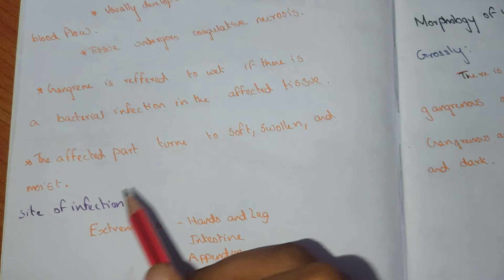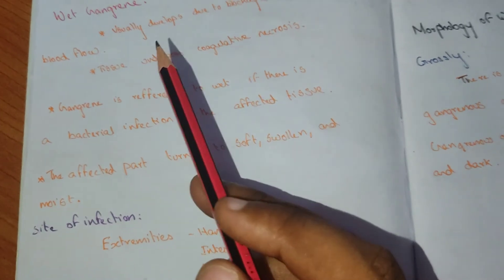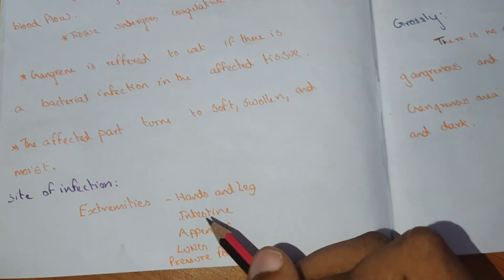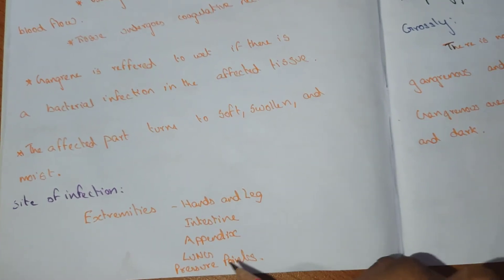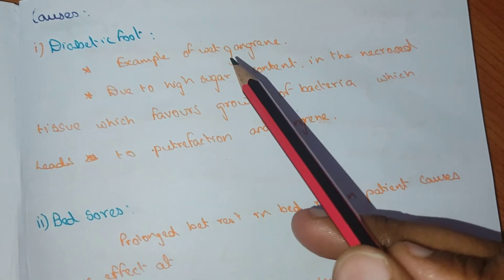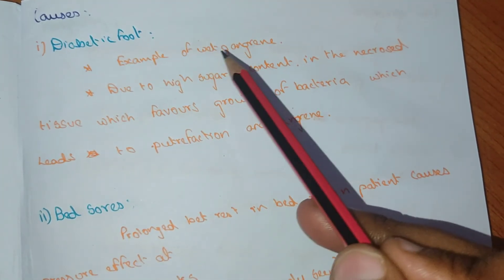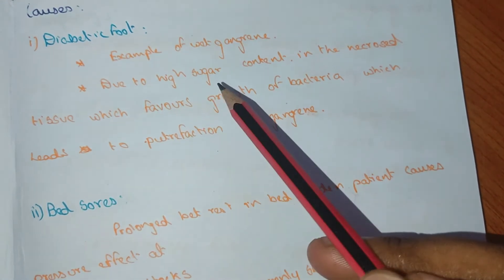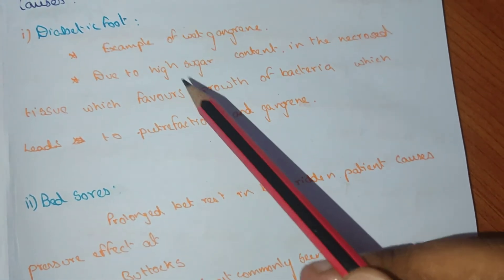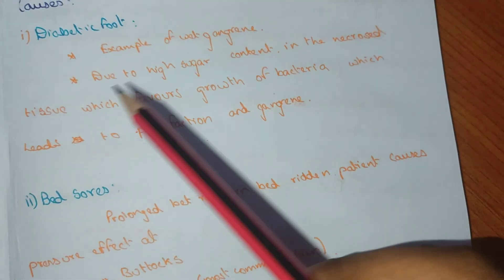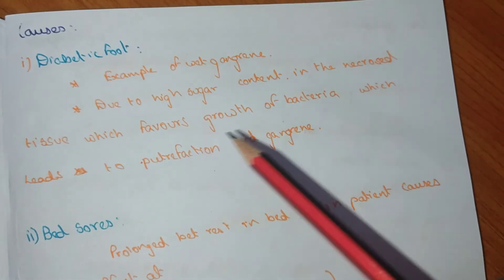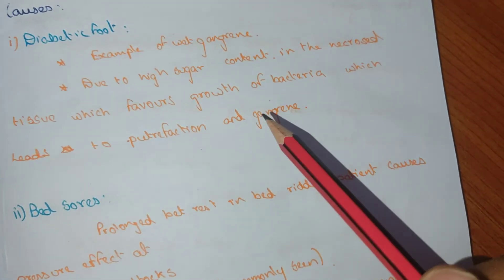The sites of wet gangrene infection include the hand, leg, intestine, appendix, lung, and pressure points. Diabetic foot is a classic example of wet gangrene — due to high blood sugar in diabetic patients, the necrotic tissue favors bacterial growth, leading to putrefaction and gangrene.